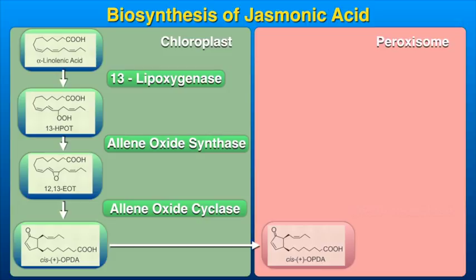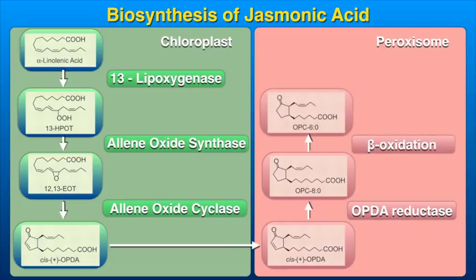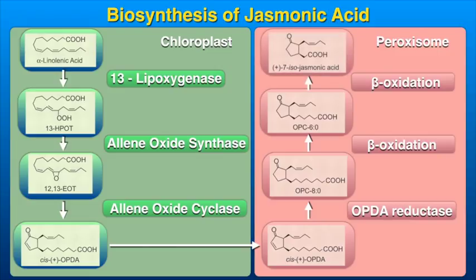In peroxisomes, the cyclopentanone ring is reduced by the enzyme OPDA reductase, or OPR3, using NADPH as a cofactor. The dihydro-12-oxo-phytodianoic acid formed undergoes chain shortening through beta-oxidation and is finally converted to jasmonic acid, which is then transported out from the peroxisome to the cytosol and is further metabolized.